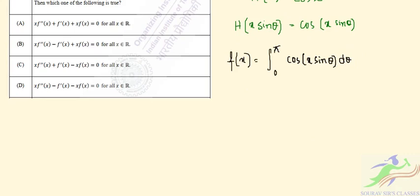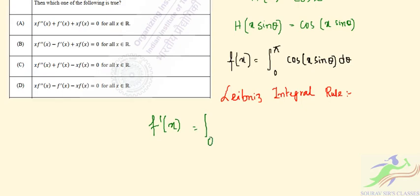Now we will use the Leibniz integral rule to take the partial derivative. We will find f'(x): the first derivative. So differentiating under the integral sign: f'(x) = integral from 0 to π of [minus sin(x sin θ)] · sin θ dθ.